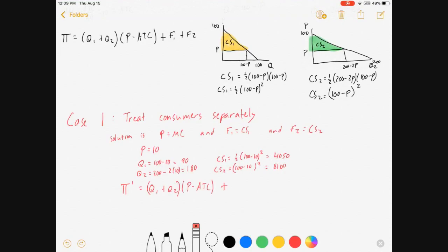Profit for the firm in this situation is the quantity it sells times its profit per unit plus CS1 plus CS2, which comes out to (90 + 180) times 0 (since 10 - 10 = 0) plus 4050 plus 8100 = $12,150. Notice since we have a constant marginal cost and we're setting the price equal to marginal cost, we get zero profit on those first terms.